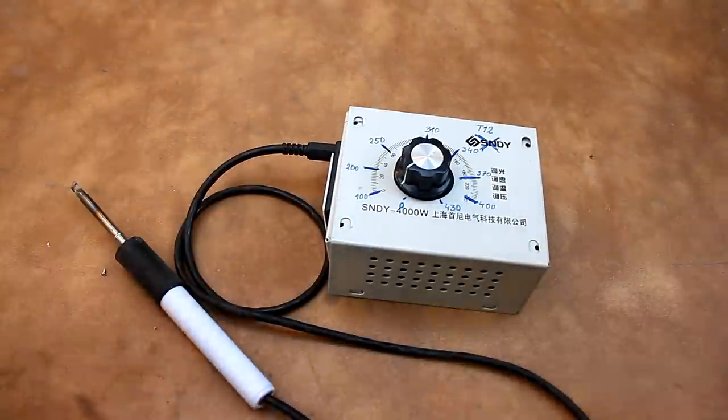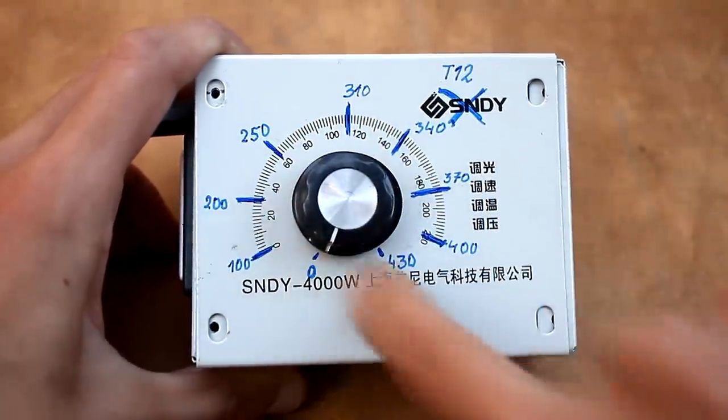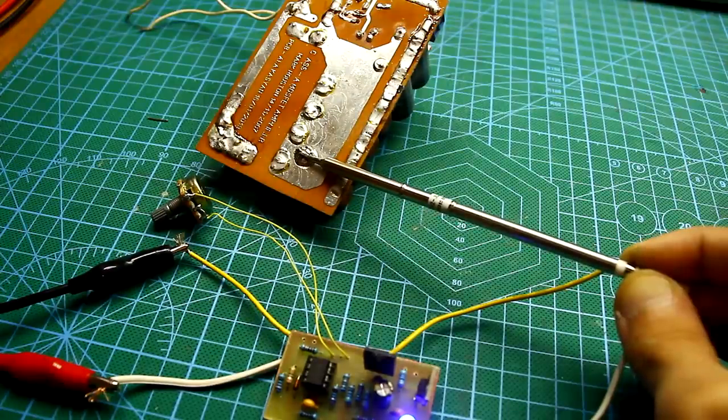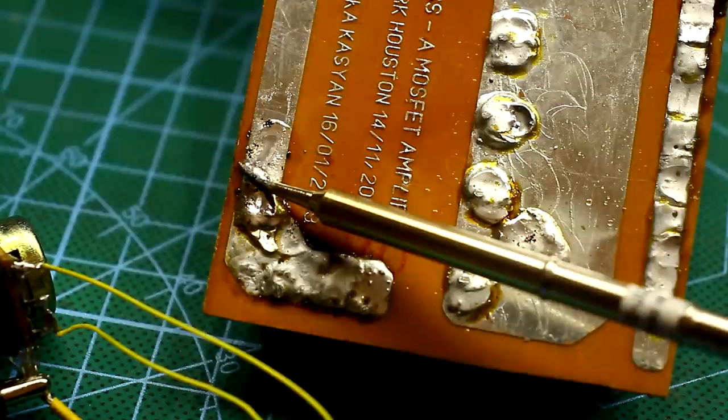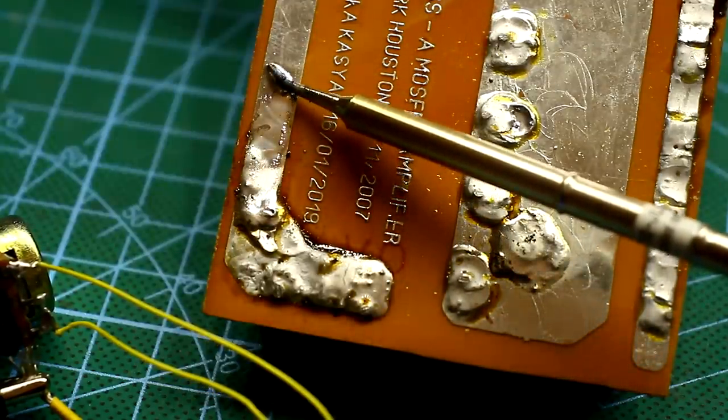Set the variable resistor to the minimum position, make a mark, record the temperature, and repeat the same for the different positions of the variable resistor. Well, the regulator itself is ready and works fine, but to solder with a bare tip is impossible, so we will make a more or less presentable handle.